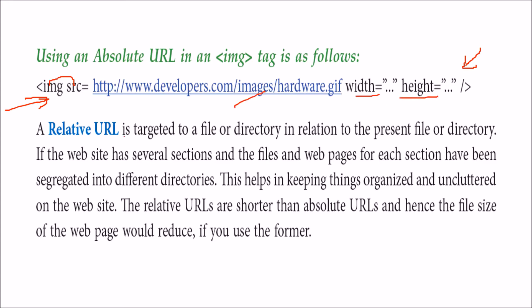Now let us come to relative URL. This is targeted to a file or a directory, and this is in relation to the present directory or the present file or directory — it is related to where you currently are. If the website has several sections, the files and web pages for each section have to be placed in different directories. This keeps things organized and uncluttered. You cannot have just one folder with all the files inside; you ought to have different folders for related files. These relative URLs are quite shorter than absolute URLs, so the file size of the web page will also reduce.